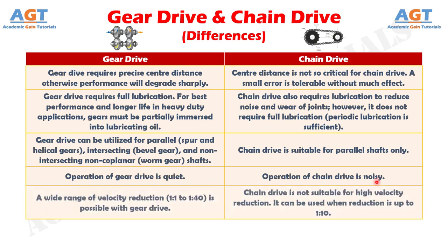Difference number 10: A wide range of velocity reduction, from 1:1 to 1:40, is possible with gear drive. Whereas, chain drive is not suitable for high velocity reduction — it can be used when the reduction is up to 1:10.